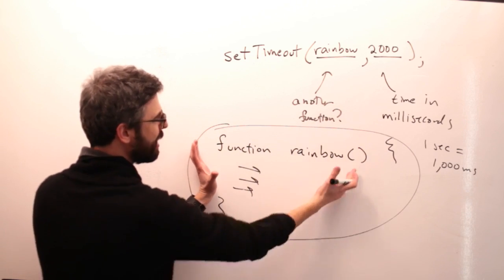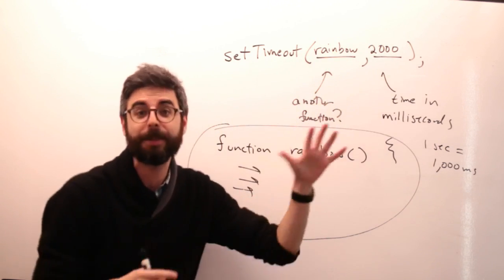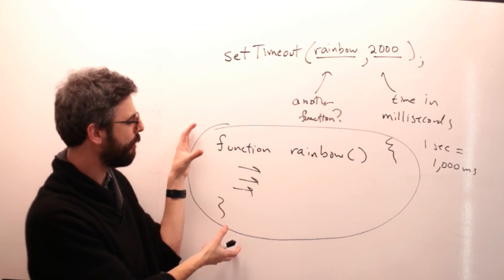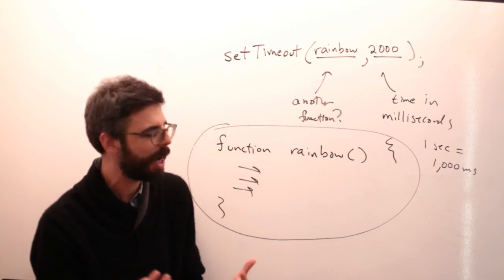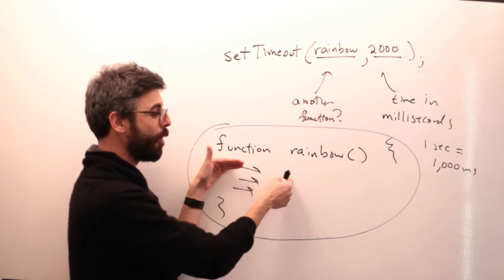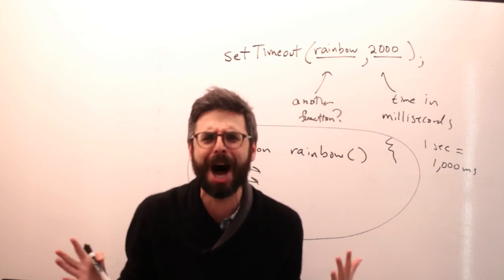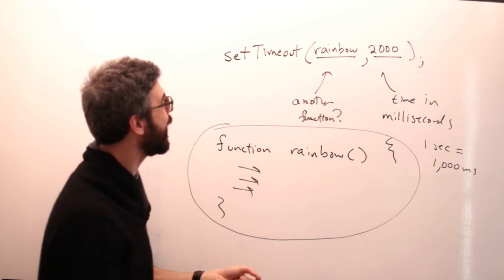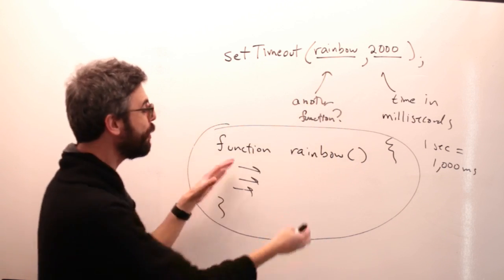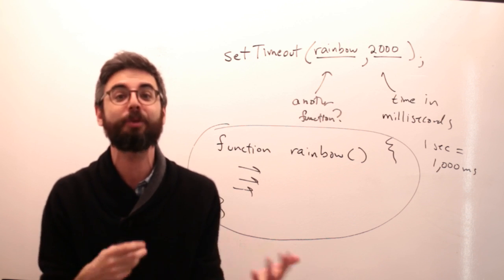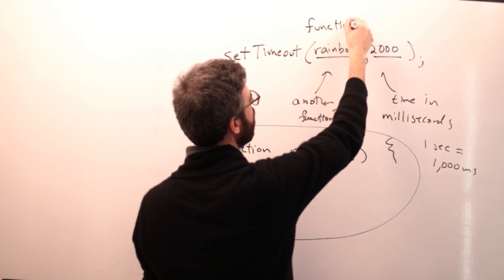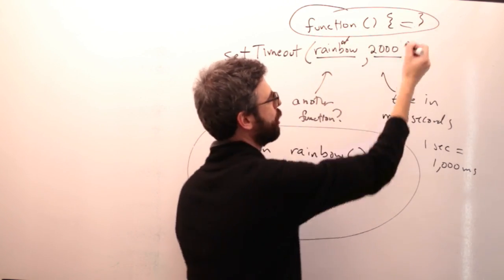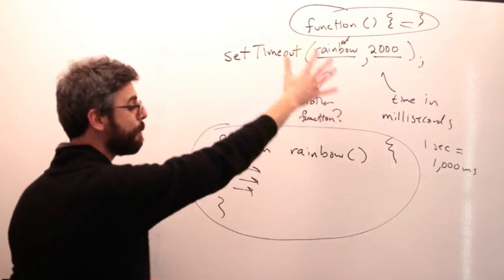You could take all the code and just stick it right in where the function reference is — I'll demonstrate that when I type it out. For teaching and legibility I often find it useful to break out the function definition into a separate place. But in many cases, especially if the function is just one line of code, it's convenient to embed it anonymously inline. What do I mean by anonymous? The function 'rainbow' has a name so setTimeout can refer to it. But if you define the function right inside the call, it doesn't need a name — you're just sticking it in there. That's an anonymous function.